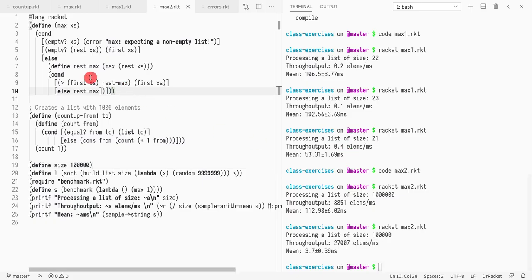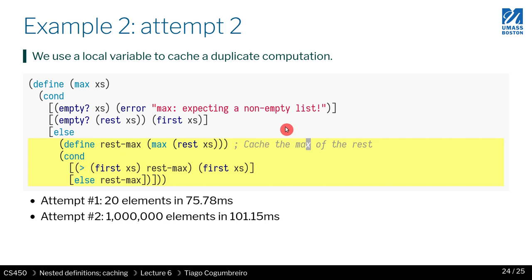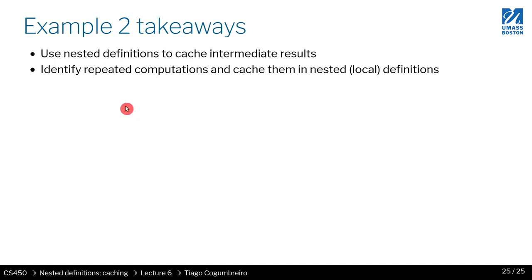Okay, of course as you would expect, because now we only compute max once, which means now the complexity of this function is now linear on the size of the list, which is great. So this is great. So we saw how nested variables can help cache temporary results which can really improve performance.